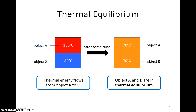The net flow of thermal energy from object A to object B will stop when both of them reach the same temperature, which in this case is 70 degrees Celsius. When object A and object B are at the same temperature, we say they are in thermal equilibrium.